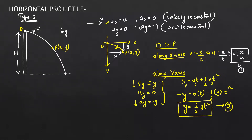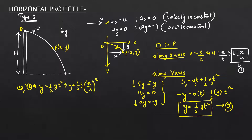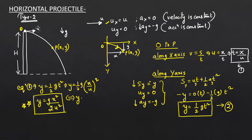From Equation 2: y = ½gt². Substituting t = x/u from Equation 1 to eliminate time: y = ½g·(x/u)² = gx²/(2u²). This matches the form y = kx², which represents a parabola. Therefore, the path of the horizontal projectile is also parabolic, just like the oblique projectile equation y = tanθ·x − g/(2u²cos²θ)·x².